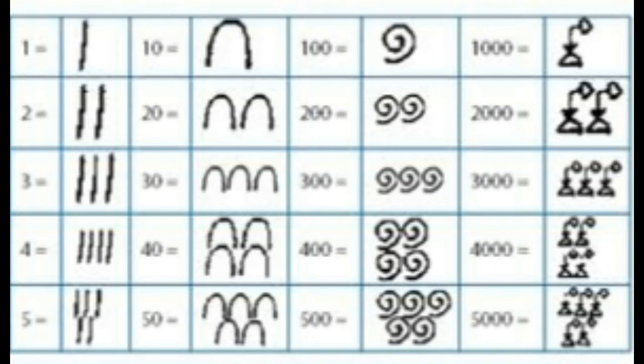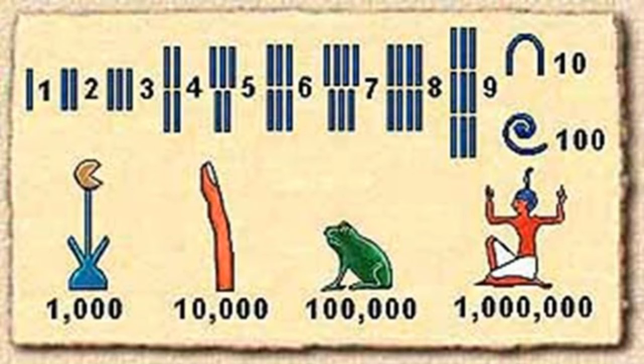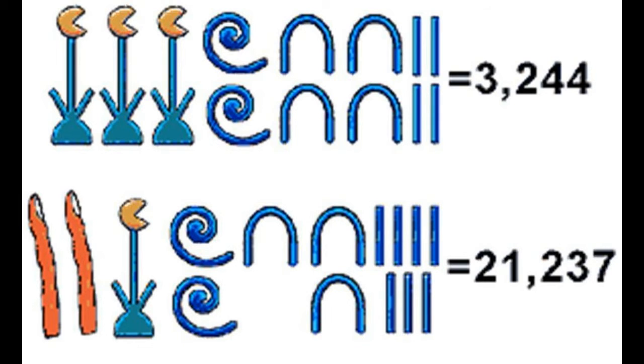Mathematics was also important in measuring time, straight lines, the level of the Nile flood, the areas of land, counting money, working on taxes, and the kitchen. Egyptians knew addition, subtraction, division, and multiplication.